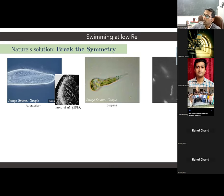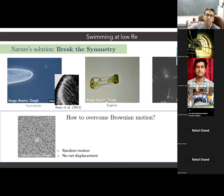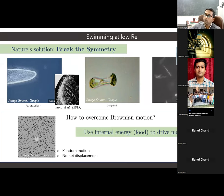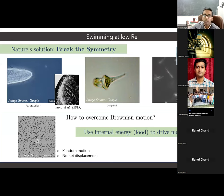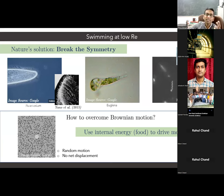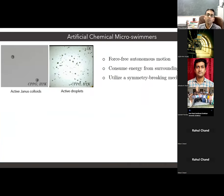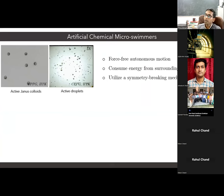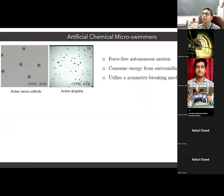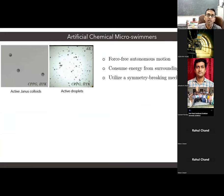These biological swimmers also extract energy from their surroundings and in doing so, they are able to overcome the Brownian displacements, and hence we see net propulsion in these biological micro-swimmers. Once we have the understanding of how these biological micro-swimmers are able to propel themselves, over the years researchers have tried to mimic this biological motion by synthesizing artificial micro-swimmers.